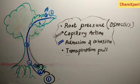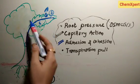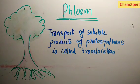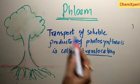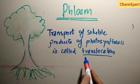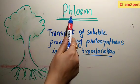We have discussed the transportation of water and minerals in plants. Now let us consider how the products of metabolic processes, particularly photosynthesis, are moved from leaves to different parts. The transport of soluble products of photosynthesis is called translocation, and it occurs in the vascular tissues called phloem.